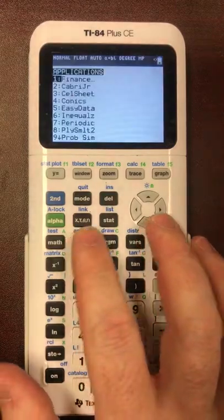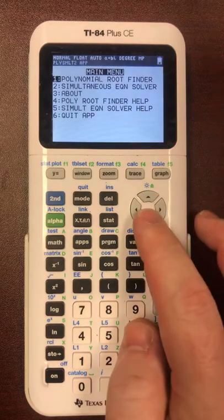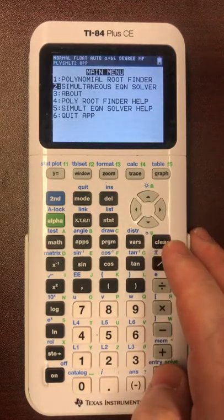You hit the apps button right here and Polysmith2 is what you choose. You choose the second option called simultaneous equation solver.